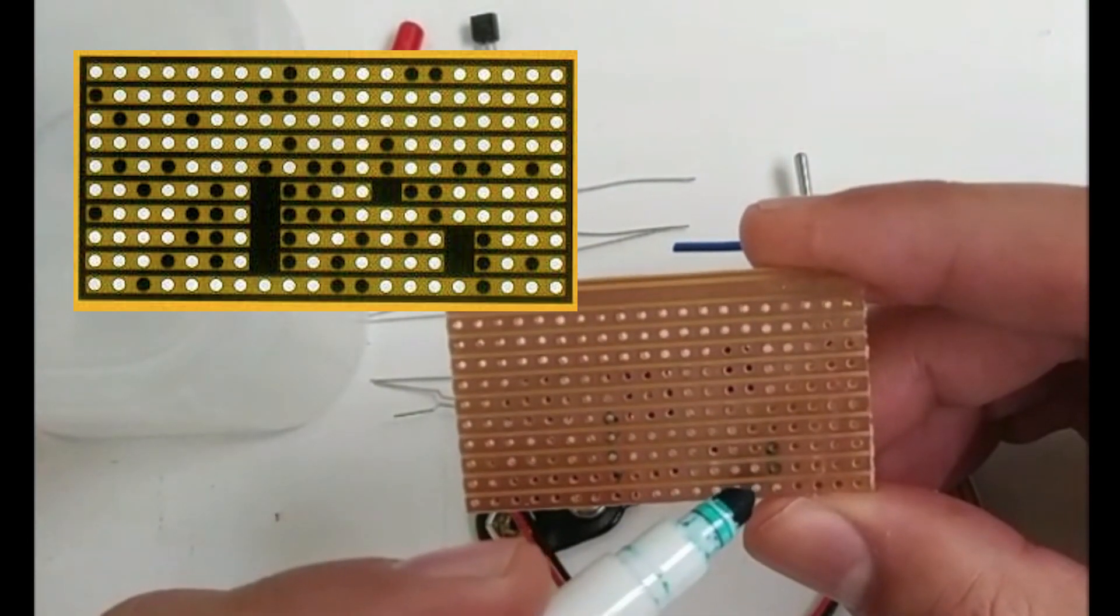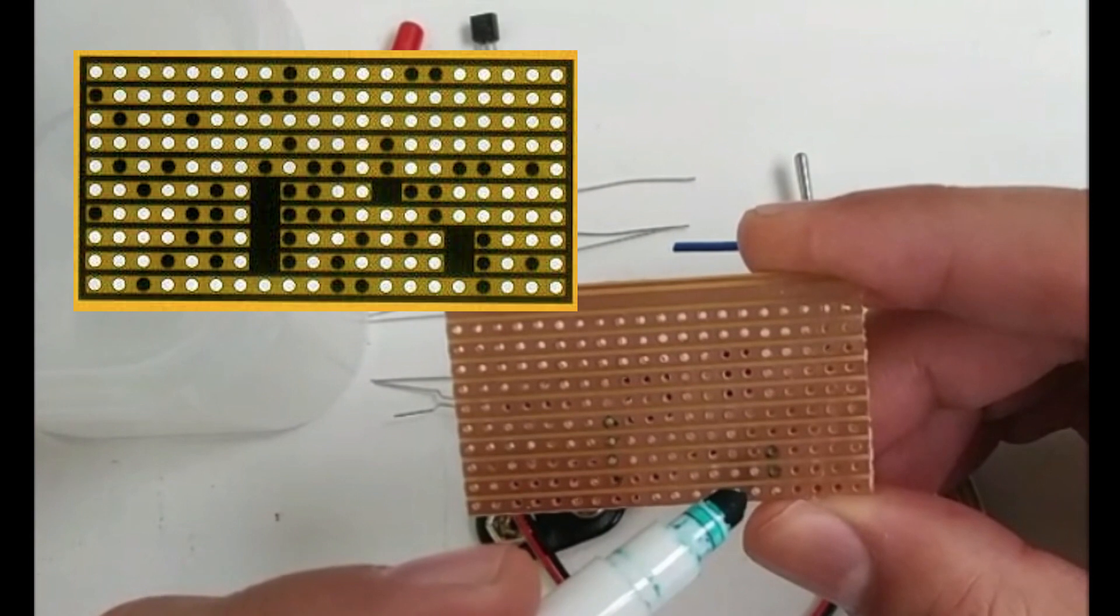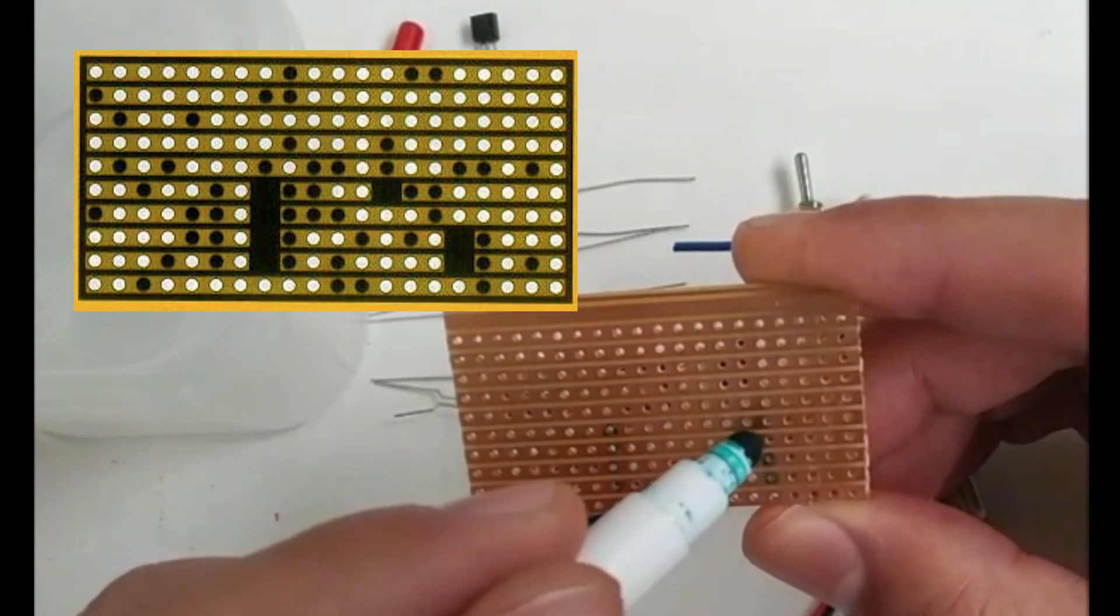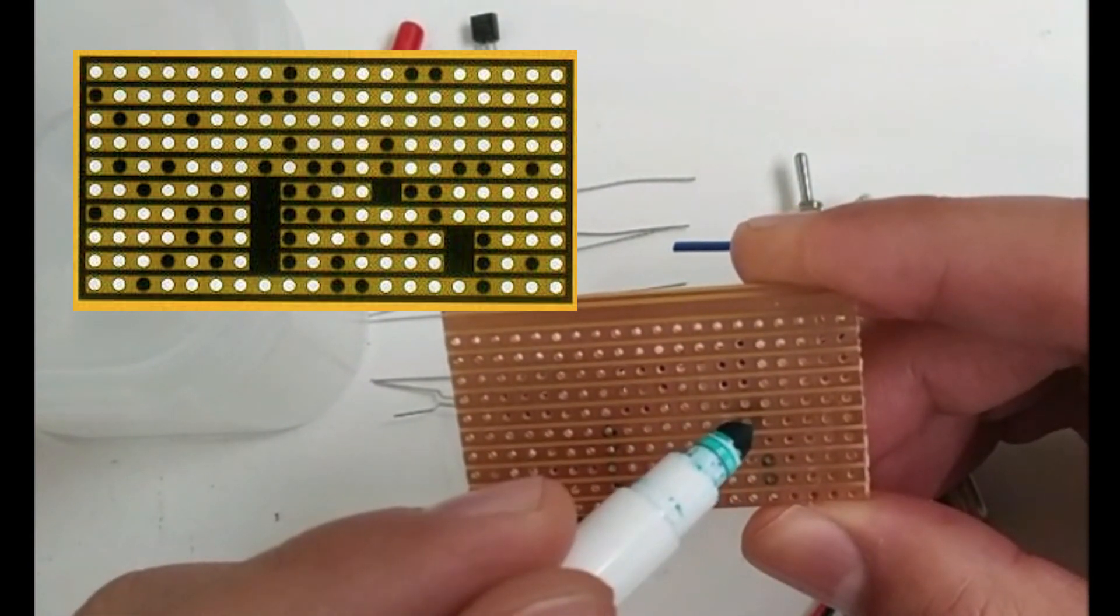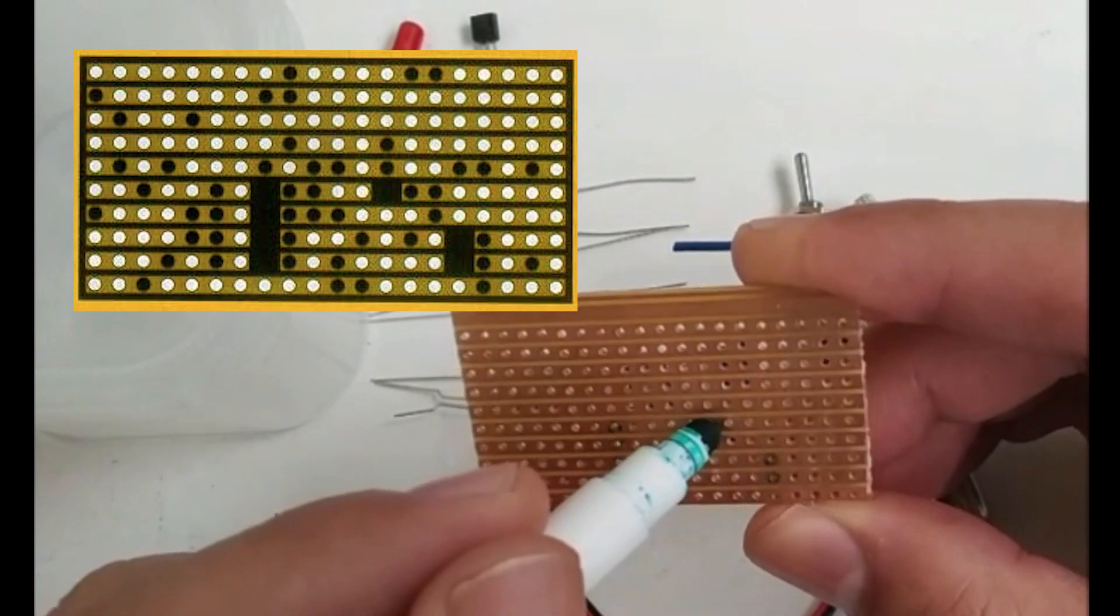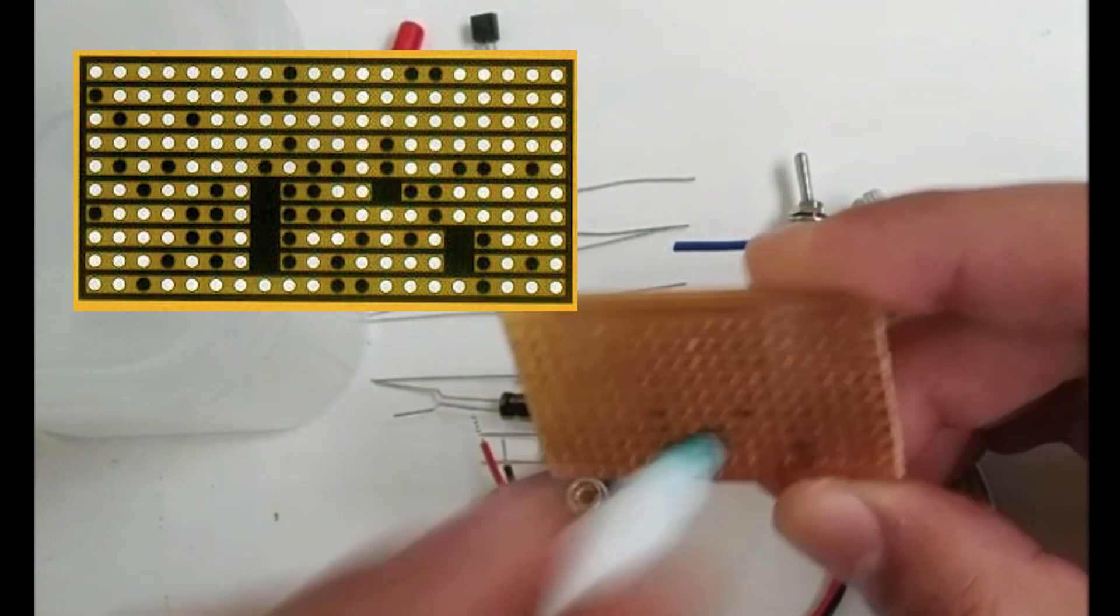And then from that bit, you need to go two up and three across. One, two, one, two, three, and cut that track.